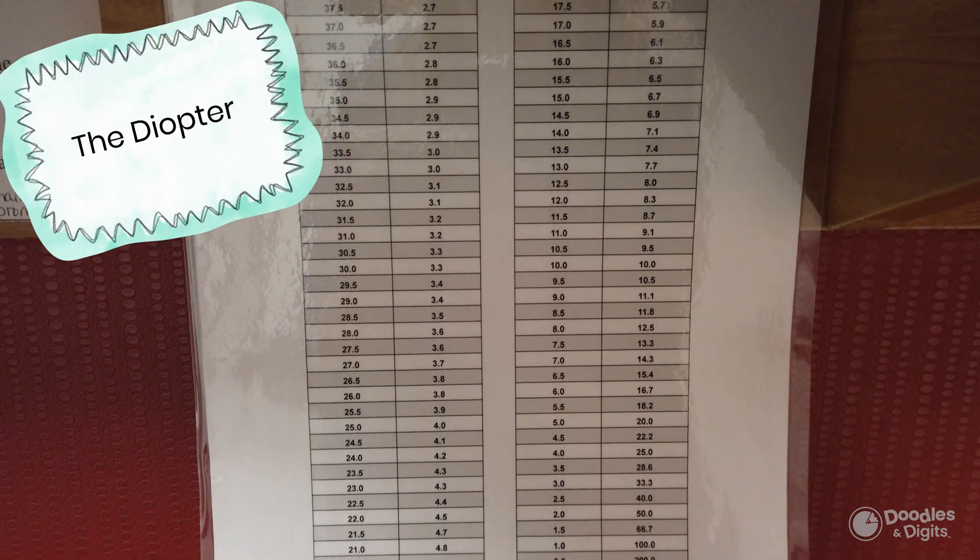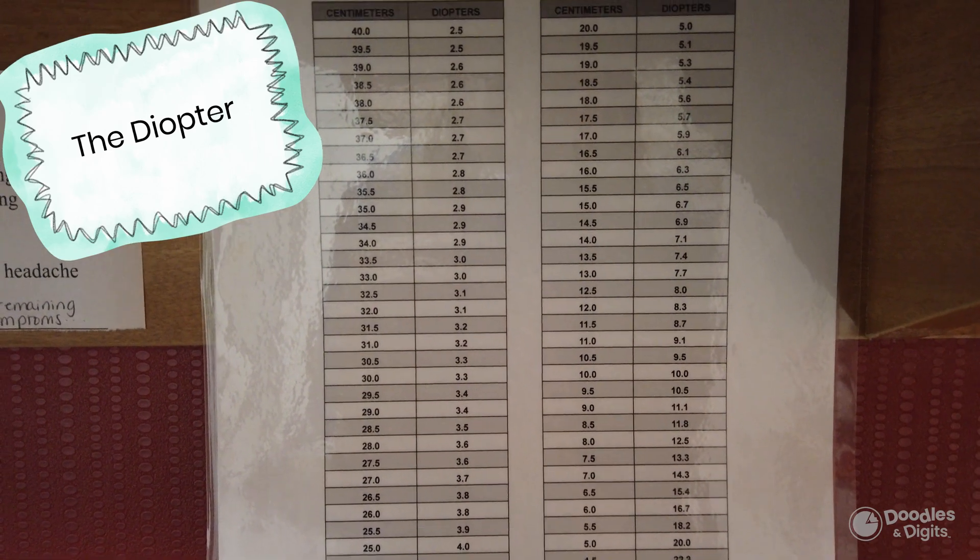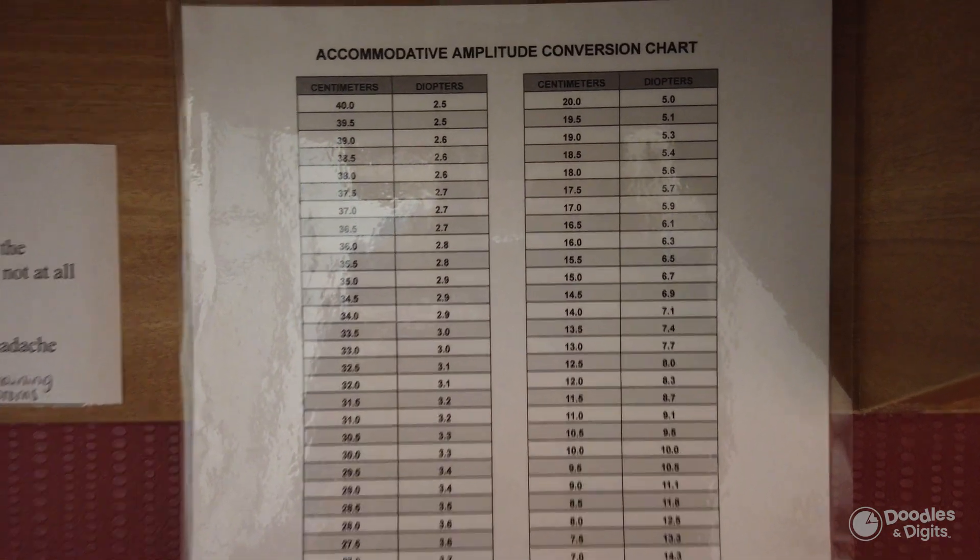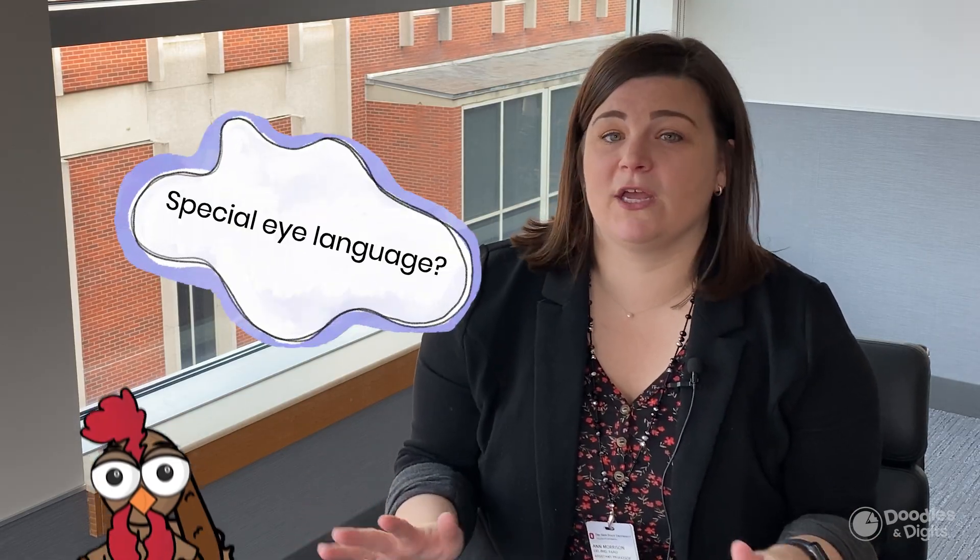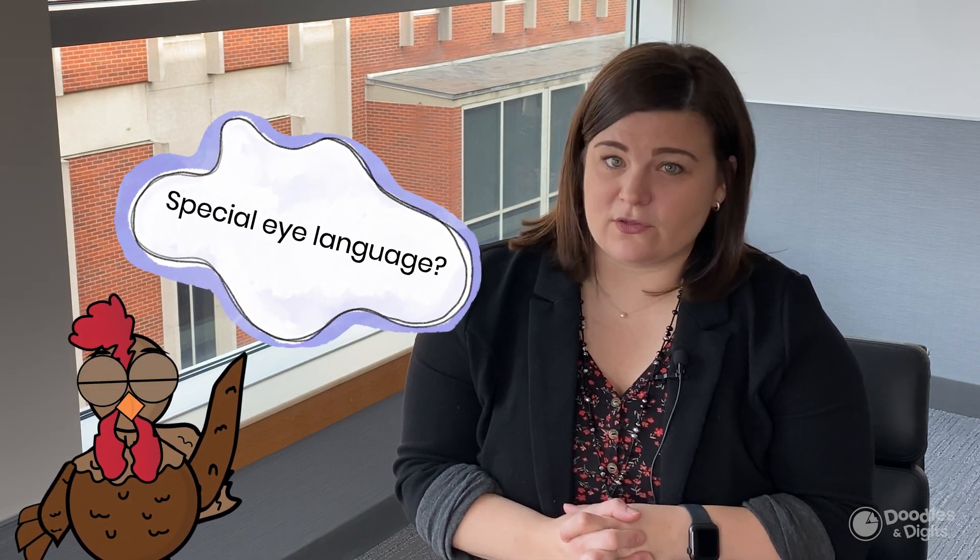What math unit do you use when you write down a prescription? The units that we use to write these prescriptions are called a diopter. A diopter is the inverse of the focal power of the lens. One diopter is one over the focal length in centimeters. We have our own special language in optometry that no one else really uses.